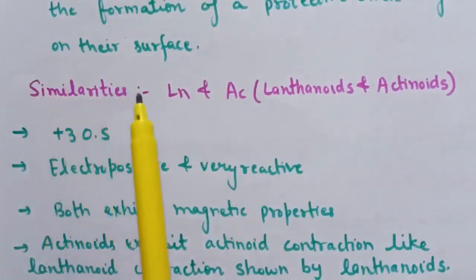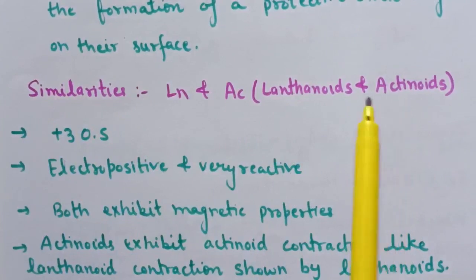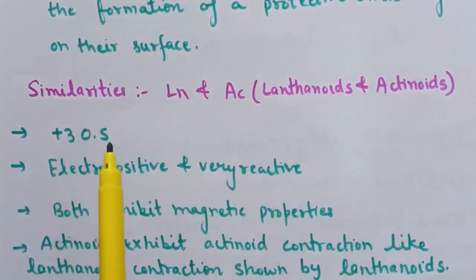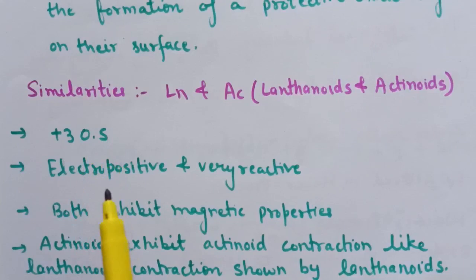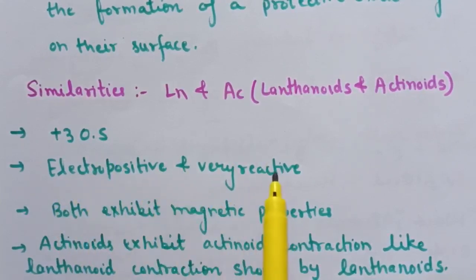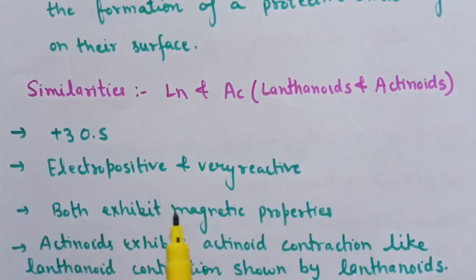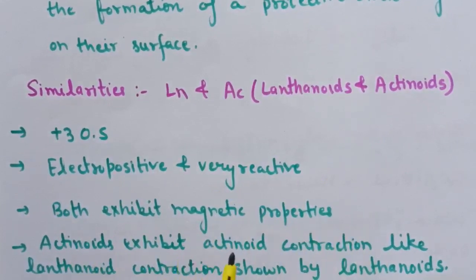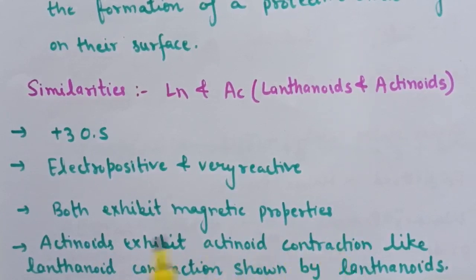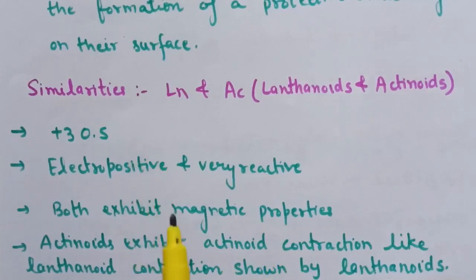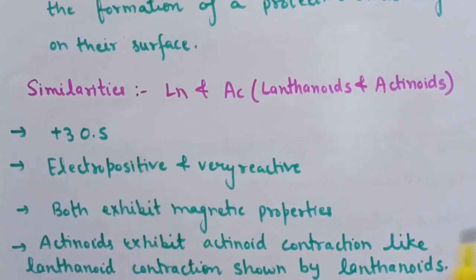Similarities between lanthanoids and actinoids: both show +3 oxidation state. Both lanthanoids and actinoids are electropositive and very reactive. Both exhibit magnetic properties. Actinoids exhibit actinoid contraction, just as lanthanoid contraction is shown by lanthanoids.